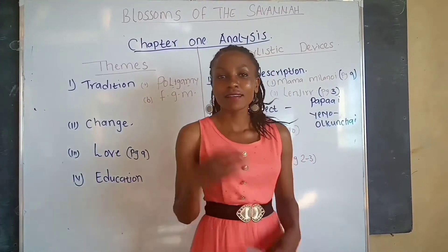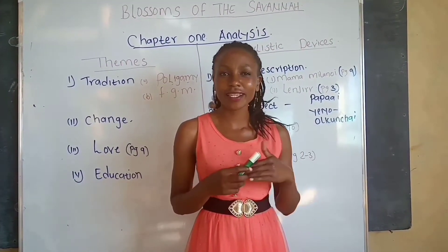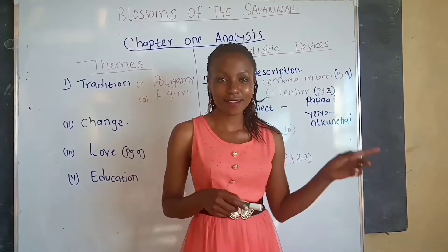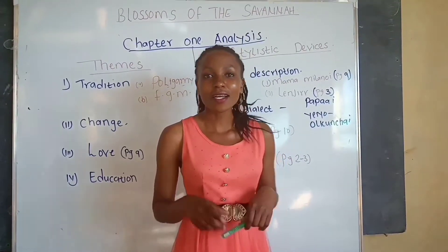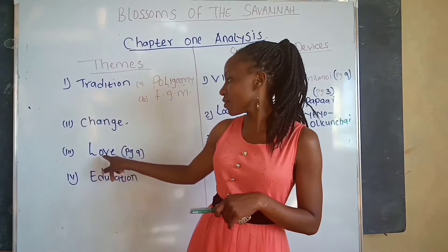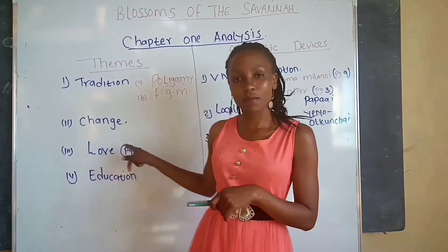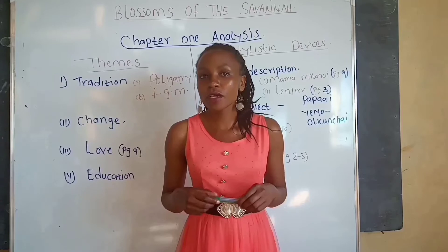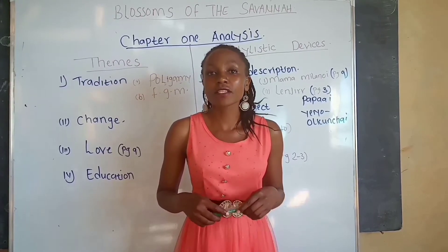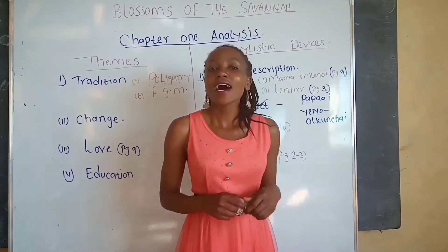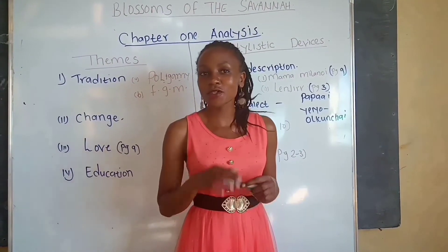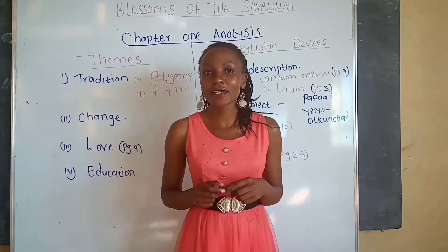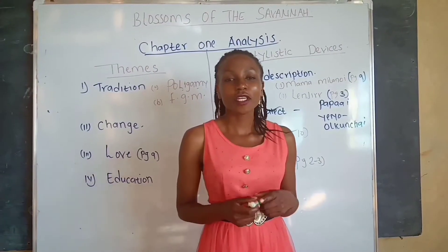The theme of love — love is that strong feeling of affection towards someone or something. We find the theme of love on page 9, where we are told that Ole Kaelo loved Mama Milanoi from the moment that he saw her at church, and 22 years later he is still obsessed with Mama Milanoi.